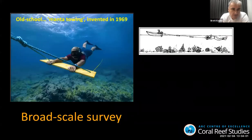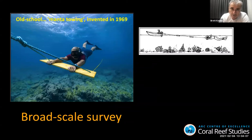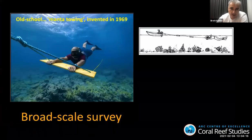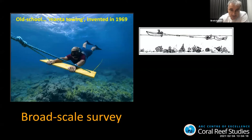This whole thing really started about three and a bit years ago when the current round of Crown of Thorns control team work was being bid. I got to contemplating how to replace the old school Manta tow technique, which goes back to Cheshire in '69 and the Crown of Thorns workshops and surveys.